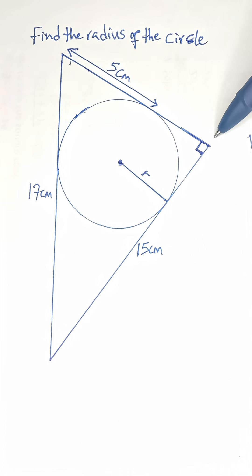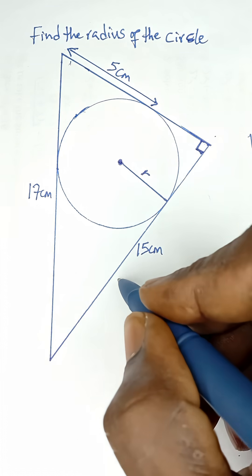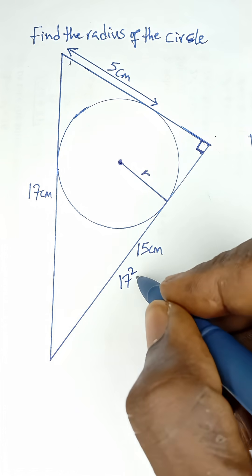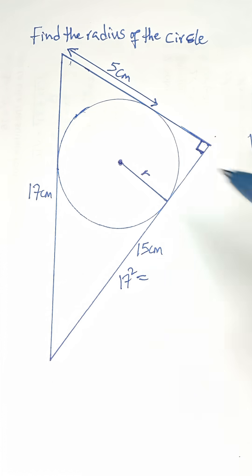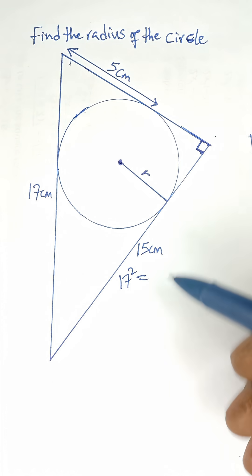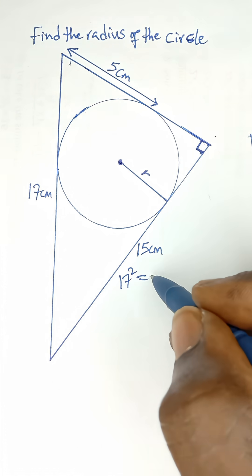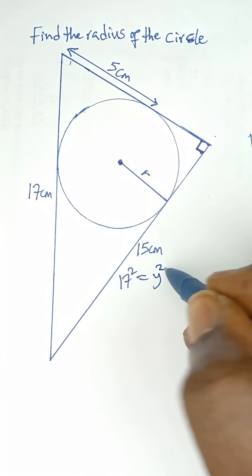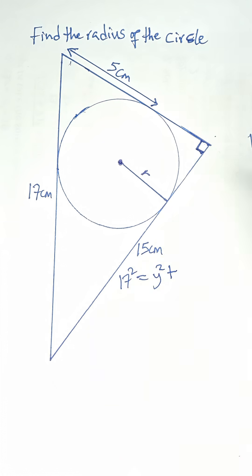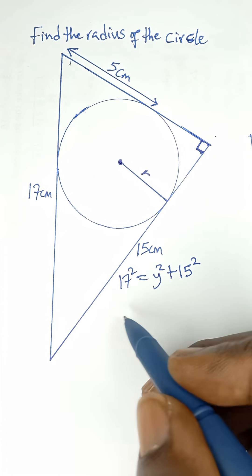Taking the full length as y, from Pythagoras' theorem the hypotenuse squared, which is 17 squared, is equal to the sum of the squares of the other two sides. So this side squared is y squared, plus the square of the remaining side, which is 15 squared.